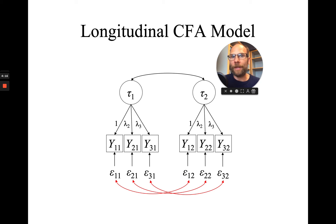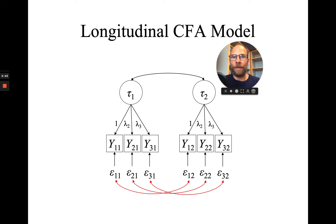That's often something we're interested in when we estimate longitudinal CFA models — we want to find out how reliable the measures are and get a good model-based reliability estimate. If there are correlated errors, we will be underestimating the reliabilities of the indicators, and there's no way to disentangle what is measurement error and what is a systematic variable-specific effect. So that's one downside: you would be confounding the systematic source of variance with error and underestimating the reliabilities of your measures.